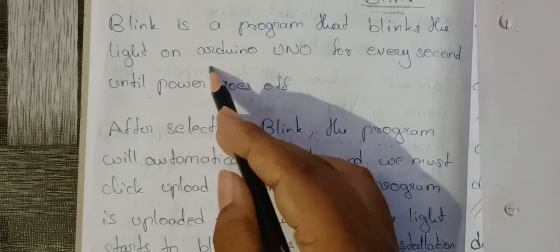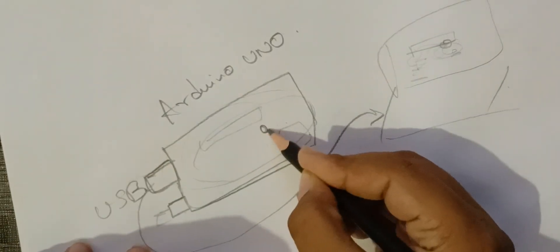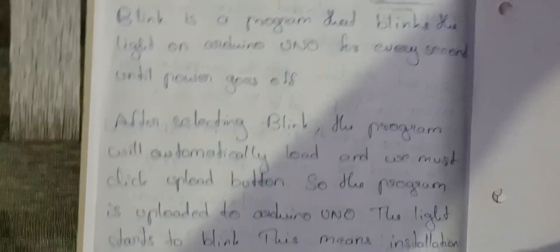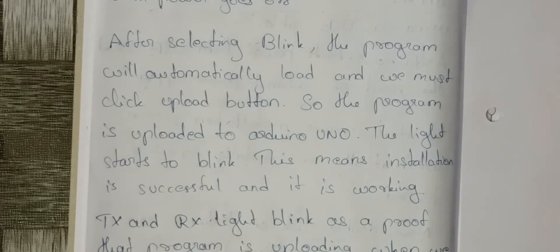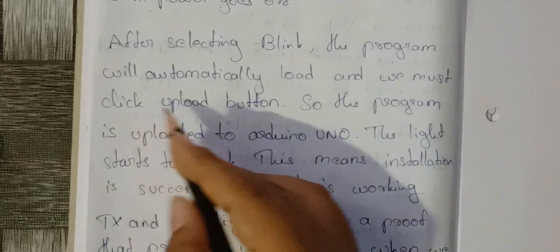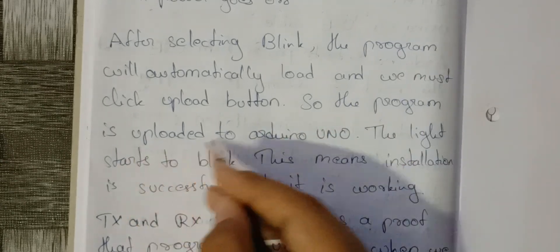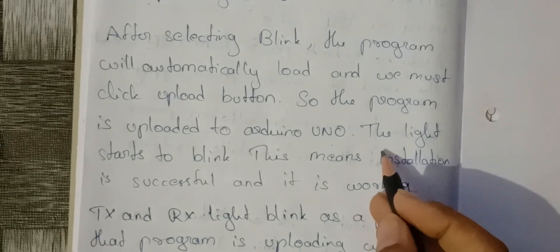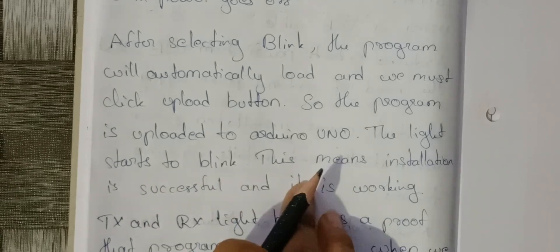Blink is a program that blinks the LED light on the Arduino Uno every second until the power goes off. The Arduino Uno board has one built-in LED. After selecting Blink, the program will automatically load on the screen since it is an example program already stored. Click the Upload button to upload the program to the Arduino Uno. The light starts to blink, which means the installation is successful and everything is working.